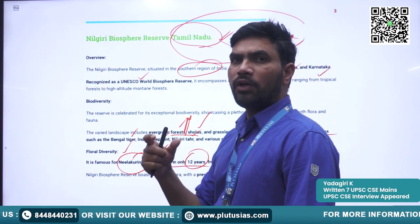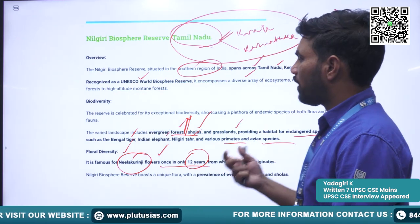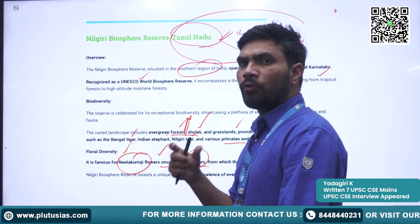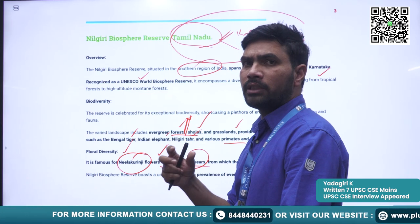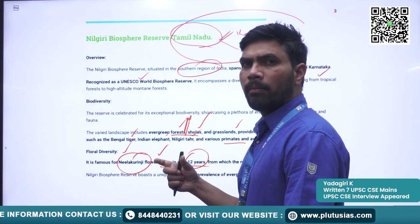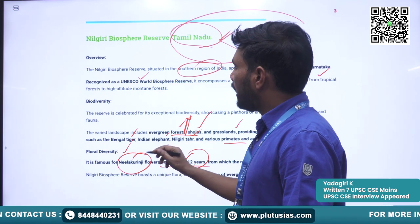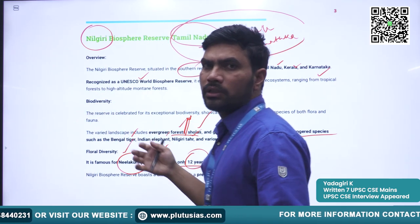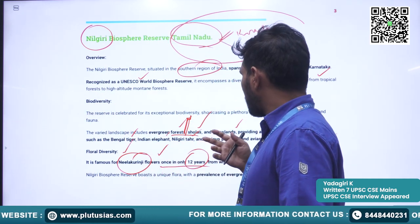The Nilakurinji flowers are blue in color — 'Nil' means blue. From this particular flower, the name 'Nilgiri' has emerged. It flowers only once in 12 years, making it a remarkable floral feature of this region.